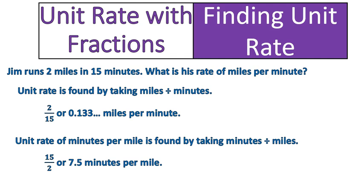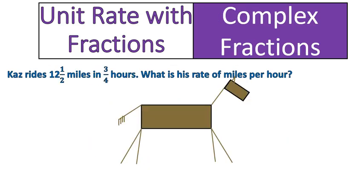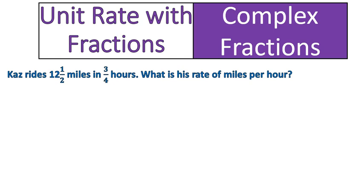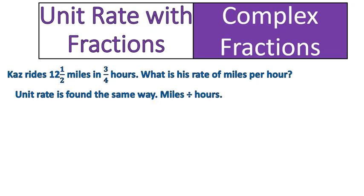This does not change when you have a fraction. In all the rest of our examples, we are going to be using fractions and fractions of time. Kaz rides 12 and a half miles in three quarters of an hour. What is his rate of miles per hour? The unit rate is found the same way — miles divided by hours. The difference is that we're going to get something called a complex fraction: 12 and a half over 3 quarters. That's a complex fraction, where you have a fraction over a fraction.